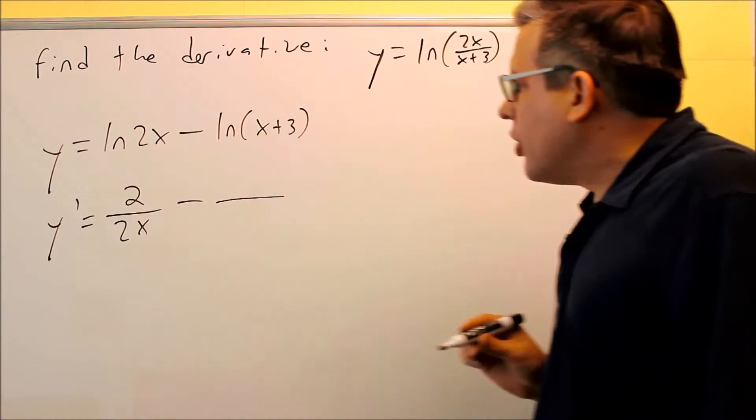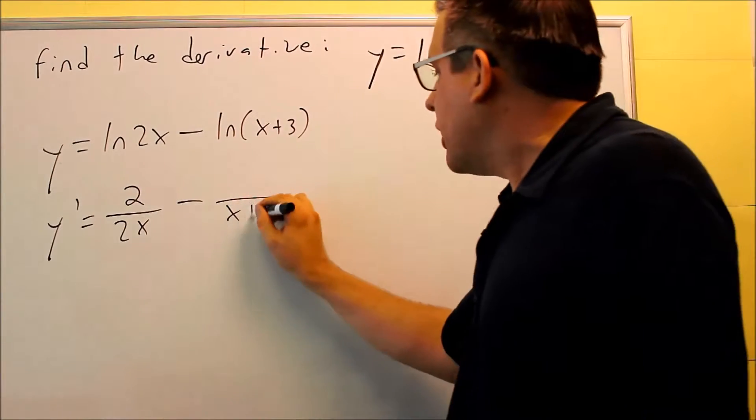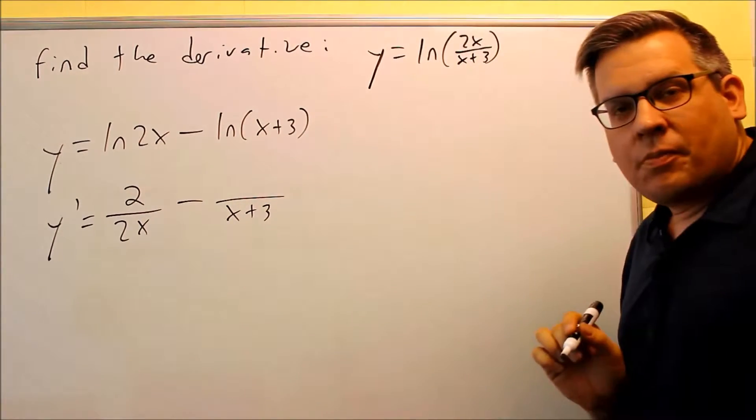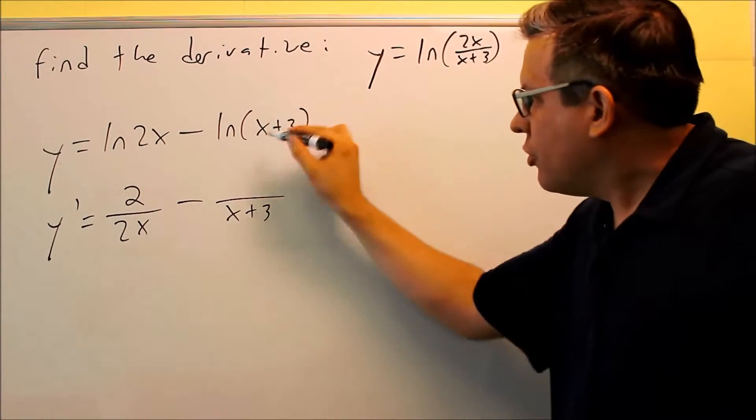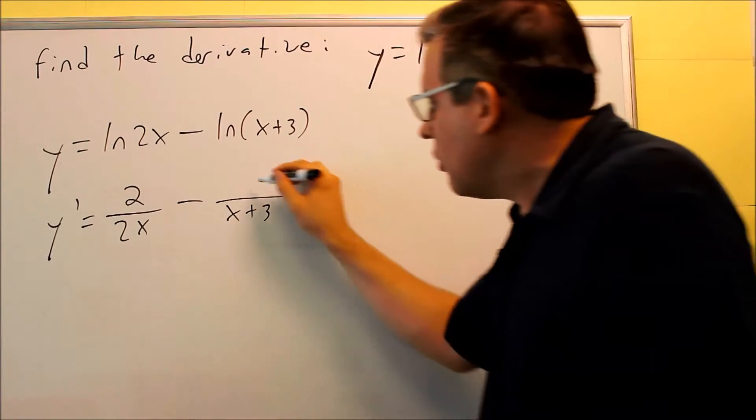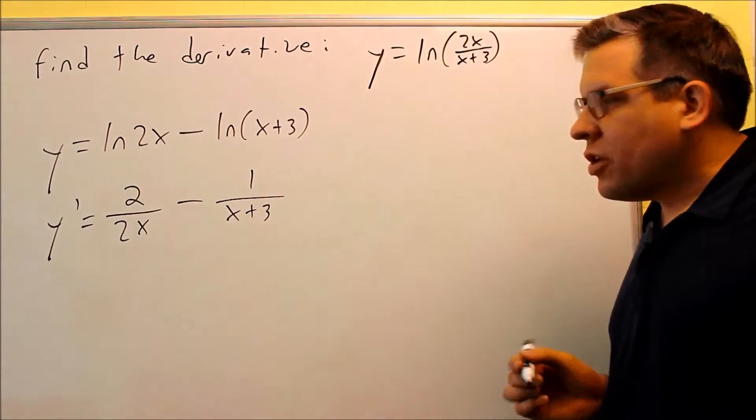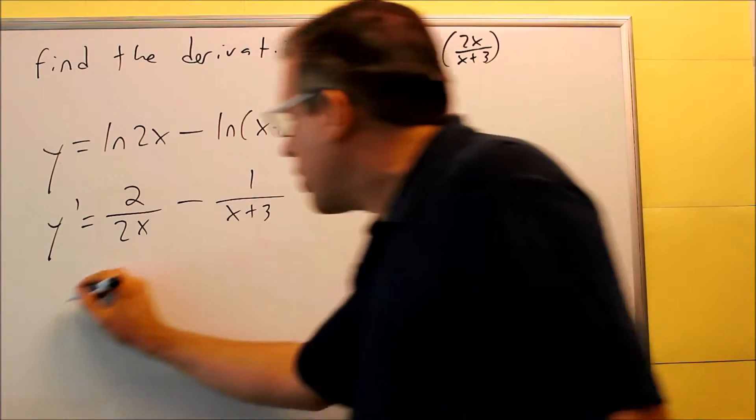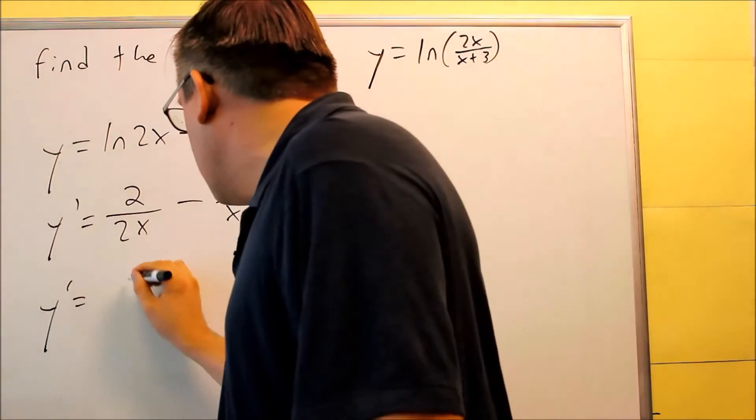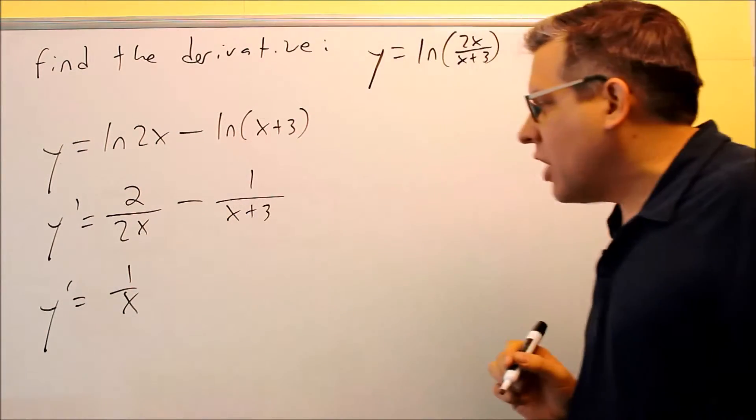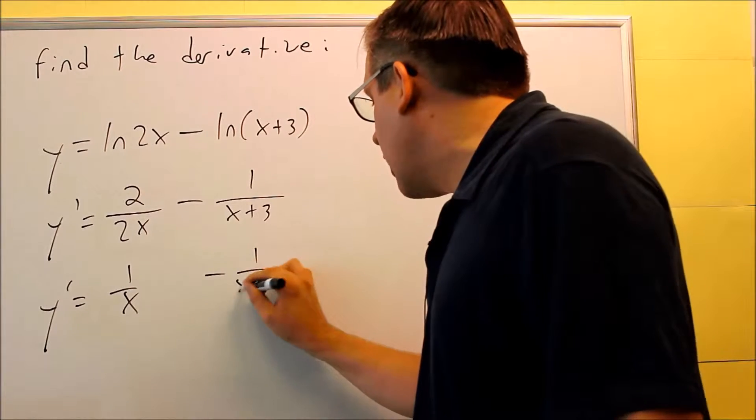Let's do this next one over here. This next one, you're going to do the x plus 3 on the bottom because that's your u. On the top, you're going to do the derivative of x plus 3, which is 1. So then we just end up with this, which we can reduce to 1 over x. The 2s cancel, and then I have 1 over x plus 3.